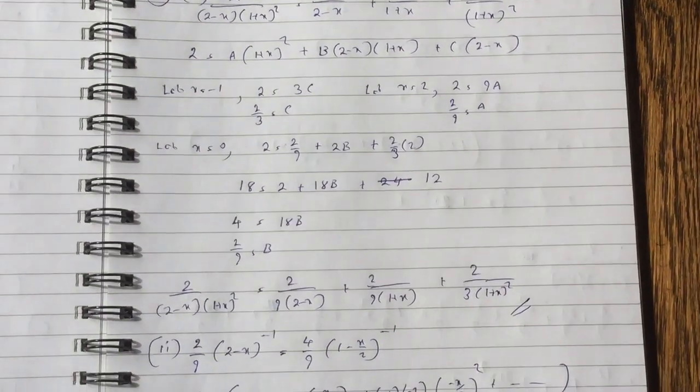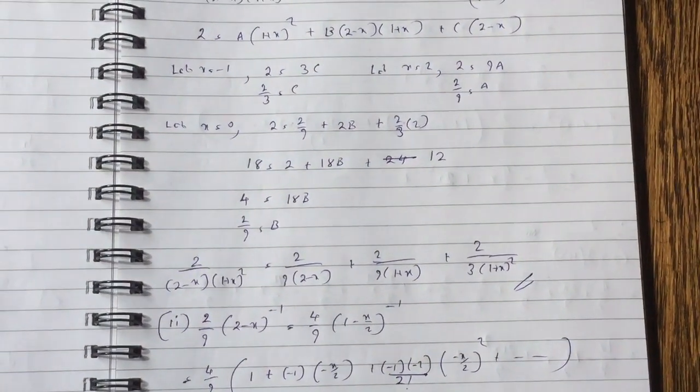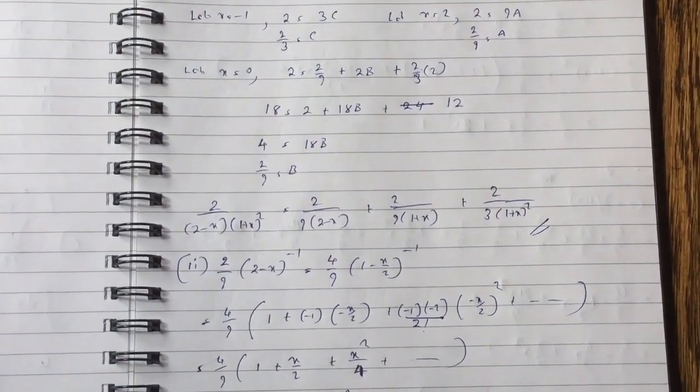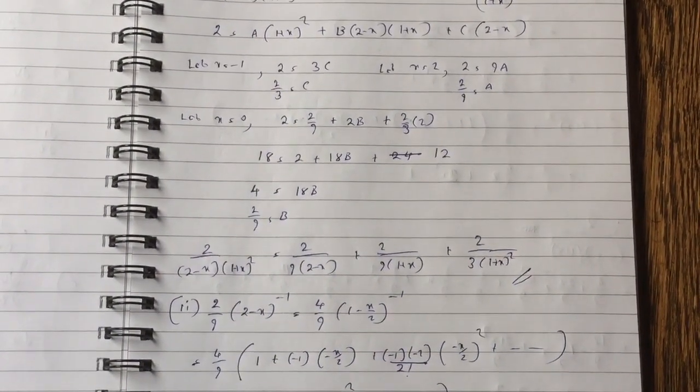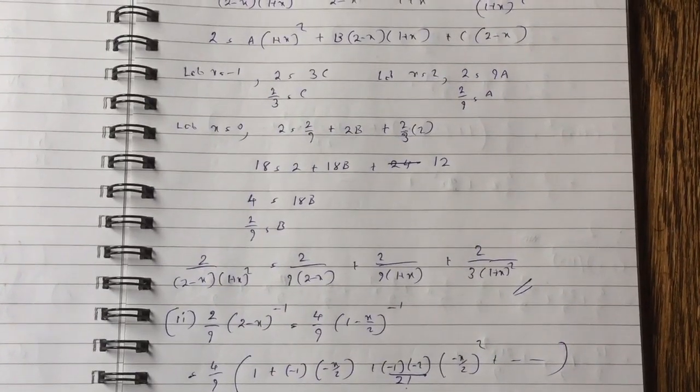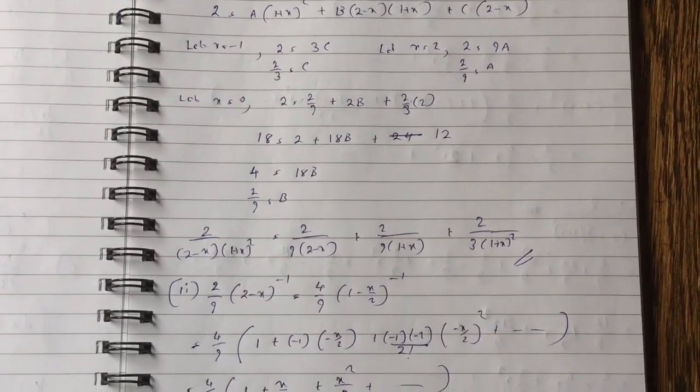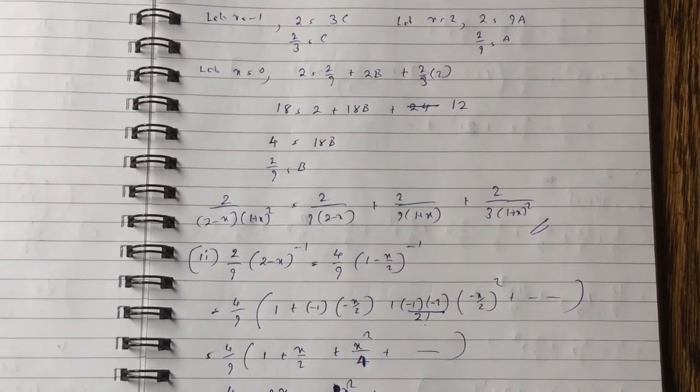When you solve it, you get c equals to 2 thirds, a equals to 2 ninths, and b is also equals to 2 ninths. So the partial fractions are 2 over 9, 2 minus x plus 2 over 9, 1 plus x plus 2 over 3, 1 plus x squared.